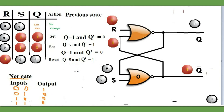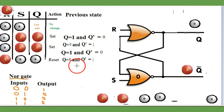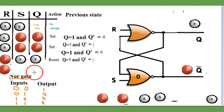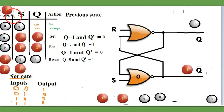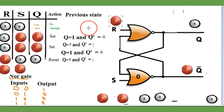Now the previous state is Q=0 and Q-bar=1. The last case: if R is 1 and S is 1, what will happen? The result will be forbidden. Let's see how it is forbidden.